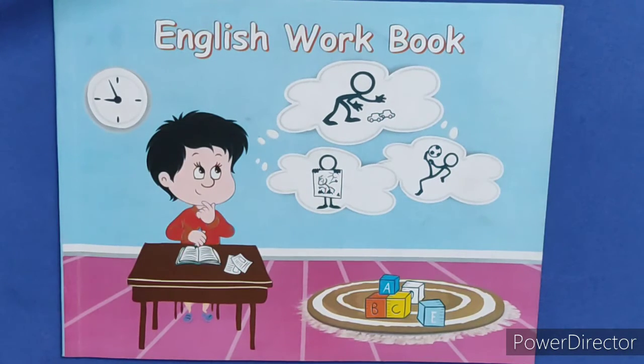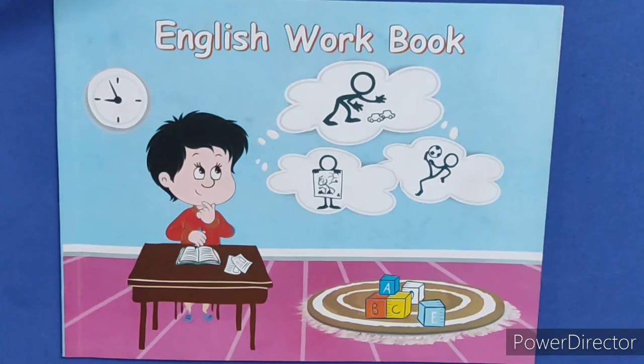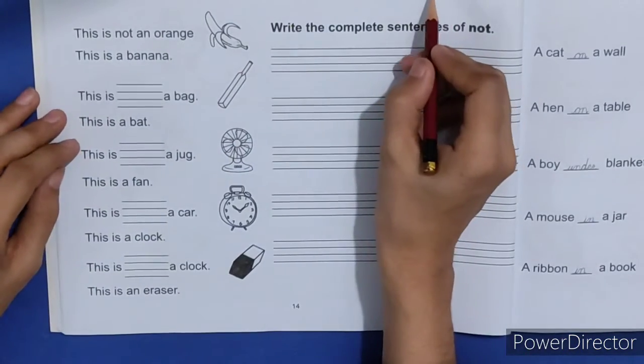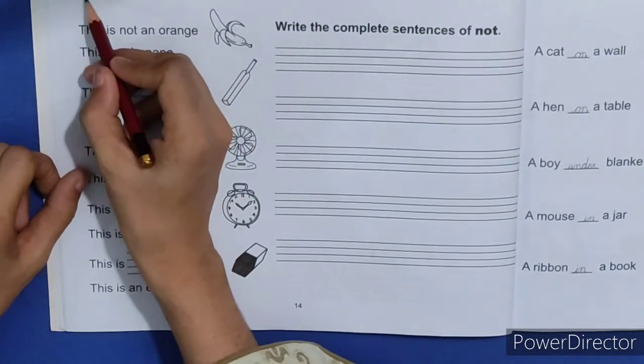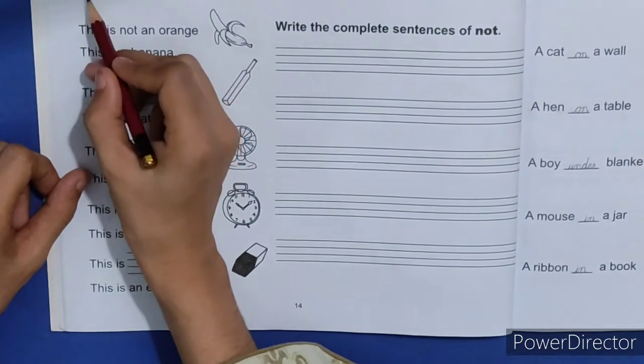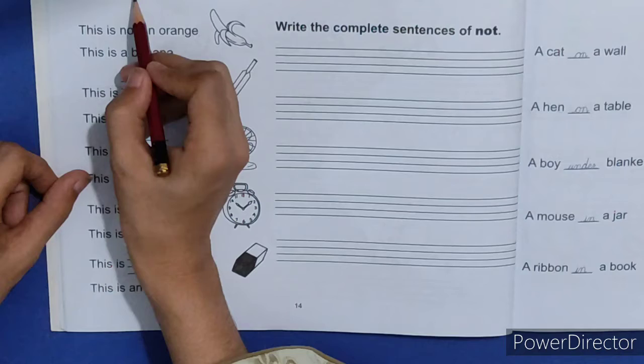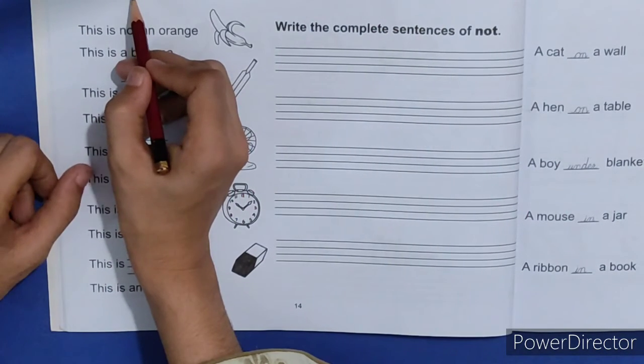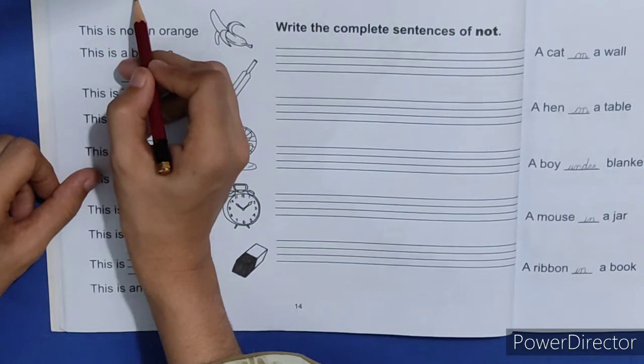Students, Assalamualaikum. Today I am here with another video. Now open your English workbook page number 14. First of all, students, write down date here. Use of not. Yaani ke not ka istamal - not keate hain nahi ko. Not ka matlab hota hai nahi.